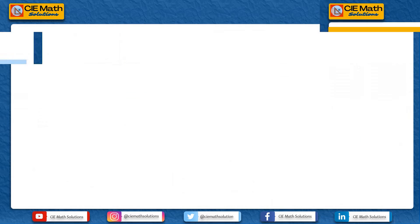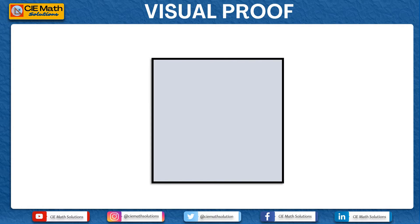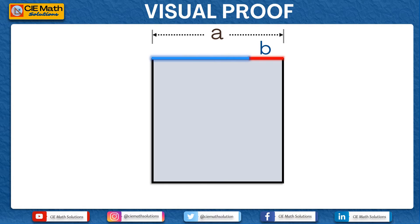Let us now start the visual proof with a square with side a. Since we are representing a minus b squared, we need to divide side a into two sections. Let us call a small section of it b. If this small section is b, then the remaining section would be a minus b. When we add these two lengths, a minus b plus b, the sum is still a, which is the length of the side of the square.